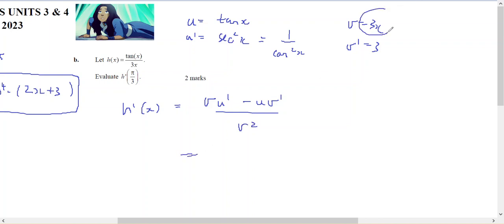So where's my v? There's my v times this. So 3x times 1 on the cos of x squared minus u times v, 3 tan of x, all on top of 3x all squared.